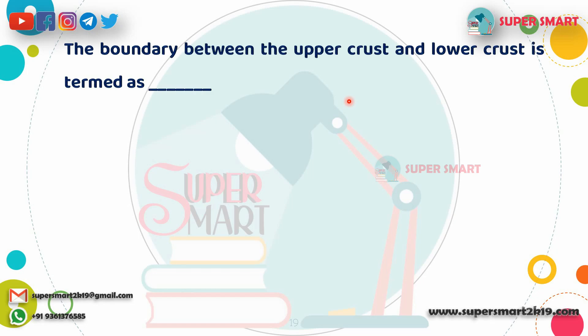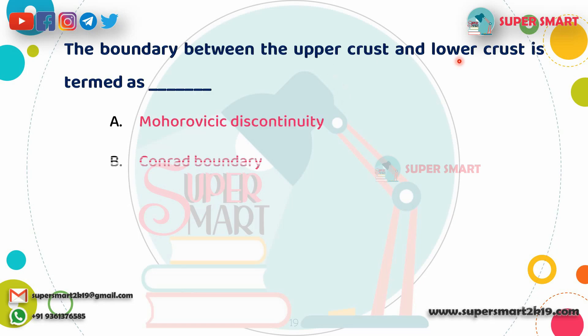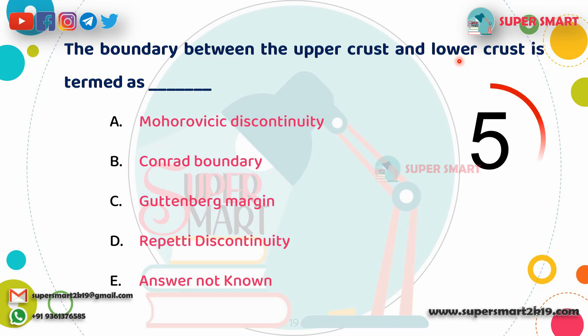Next question: What is the boundary between the upper crust and lower crust of the Earth called? The Earth has three layers — the upper crust and lower crust boundary.